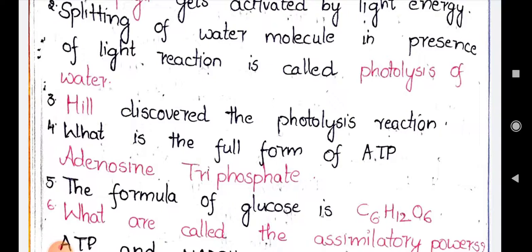The fifth question: 'What is the formula of glucose?' In previous worksheets I wrote the equation for photosynthesis, and the end products are glucose, water molecule, and oxygen. The formula for glucose is C6H12O6.